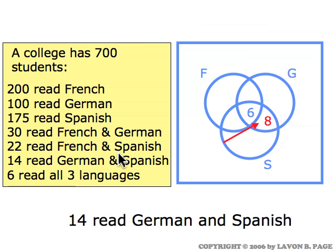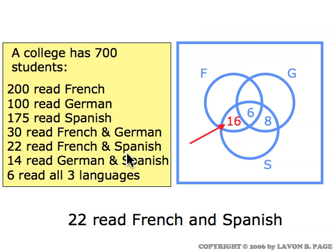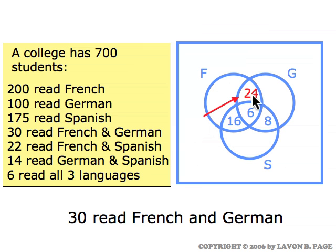Working our way back up: twenty-two read French and Spanish, so for consistency that means we need to put a sixteen in this spot, giving us a total of twenty-two in the overlap of the French group and the Spanish group. Thirty read French and German, which means we have to put a twenty-four in this spot, giving us a total of thirty reading French and German.